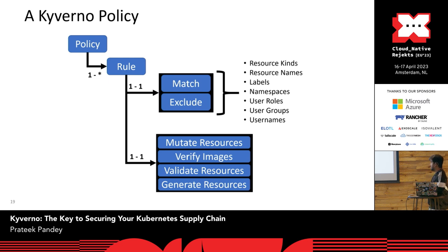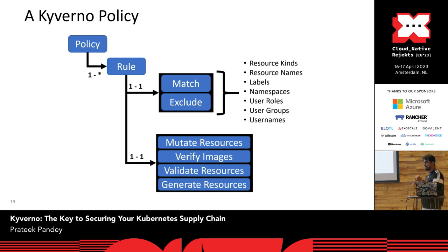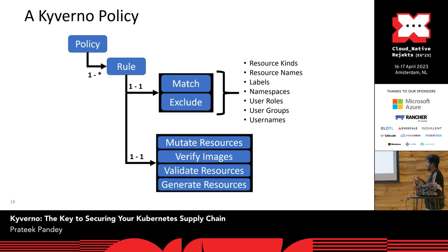A Kyverno policy is a custom resource. Inside a rule, you have match and exclude resources. Based on resource kinds, names, or labels, you can match resources. Similarly, you can exclude certain resources — for example in the exclude block you can mention excluded namespaces so that the policy will not be applied there. Each rule contains match and exclude, and rules can either mutate, generate, validate, or verify images.